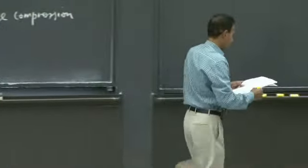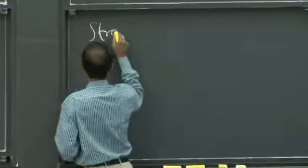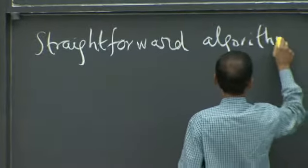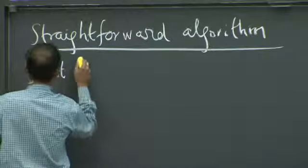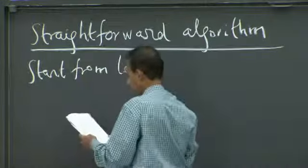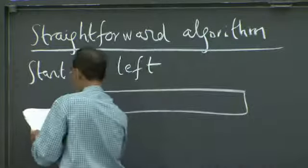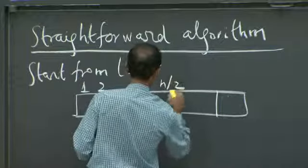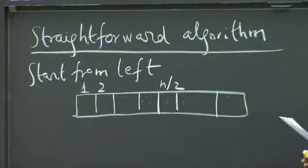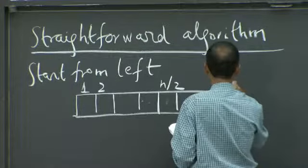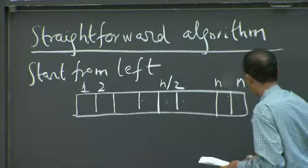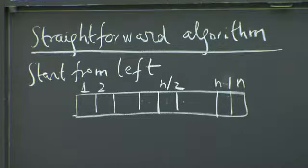The straightforward algorithm is something that just walks across the array. We need that as a starting point for building something more sophisticated. If we start from the left and traverse, we're interested not only in the algorithm but in precisely characterizing its complexity in relation to n, the number of inputs.